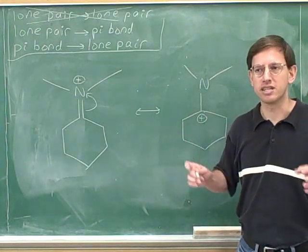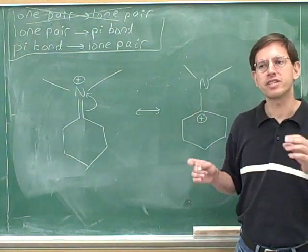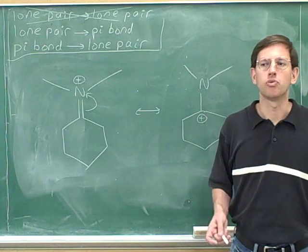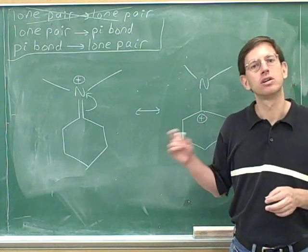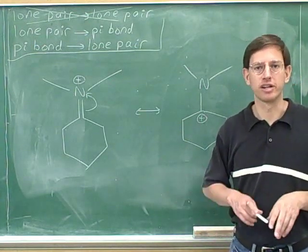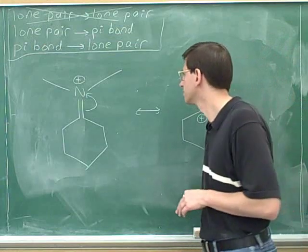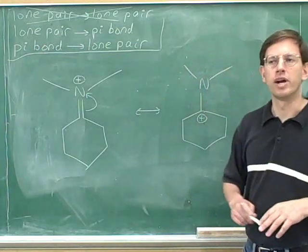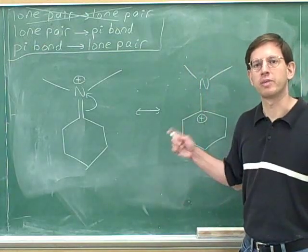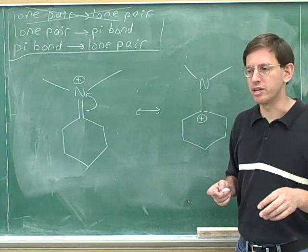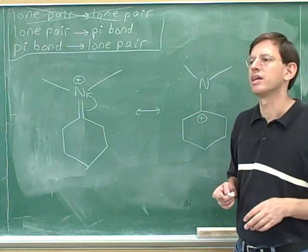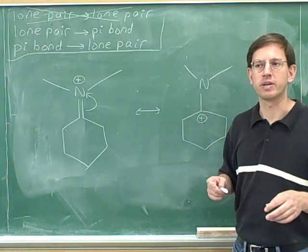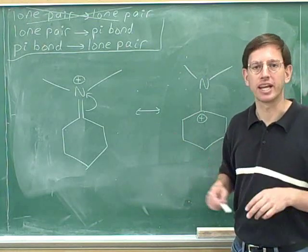To repeat one of the key ideas: for every single arrow you have to ask yourself two questions — where are the electrons coming from, and where are the electrons going to? Wherever the electrons are coming from, that atom is going to become less negative, and wherever the electrons are going to, that atom is going to become more negative.